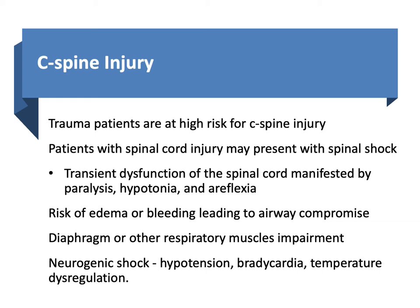C-spine injuries also hold the risk of edema or bleeding and hematoma formation, which may lead to airway compromise. This may include injury to the vertebral arteries, which travel within the transverse foramen of the cervical vertebrae. C-spine injuries that cause motor dysfunction may result in impaired function of the diaphragm or other respiratory muscles, placing the patient in respiratory compromise. Lastly, patients may present in neurogenic shock, classified as a loss of sympathetic tone leading to hypotension, bradycardia, and temperature dysregulation.